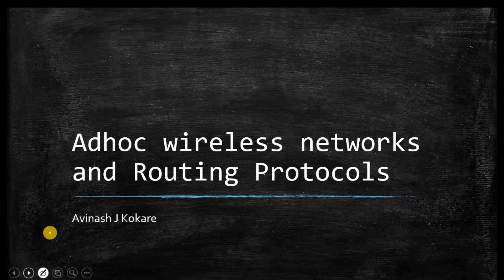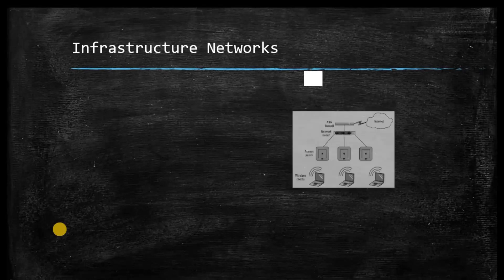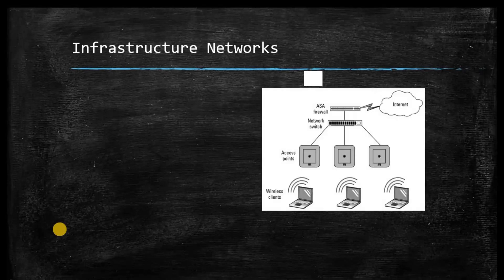We start with the basics of ad-hoc network. To understand ad-hoc network we will first understand two types of wireless network: one is called the infrastructure network and another is called the infrastructure-less network.